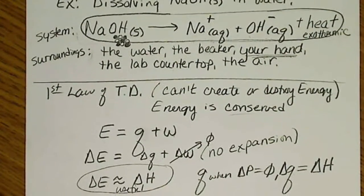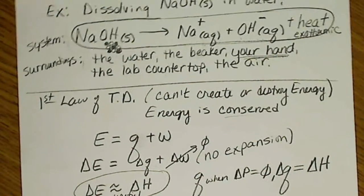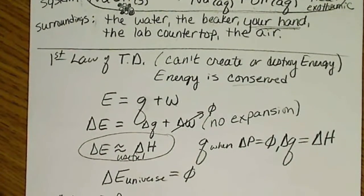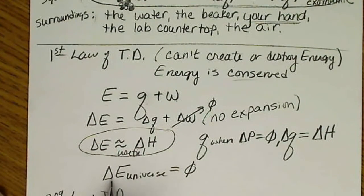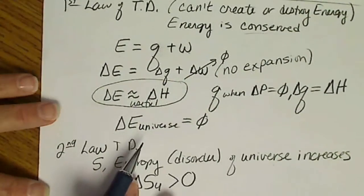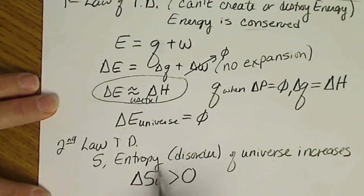So the first law, energy is conserved, and we are going to be concerned about the change in energy of our system. The second law of thermodynamics states that the overall entropy of the universe is always positive. It's always increasing. And the third law defines the zero point in entropy. So that is a nice definition.